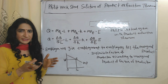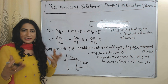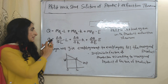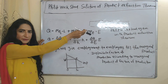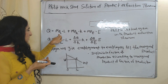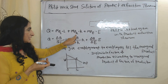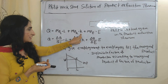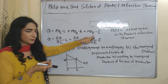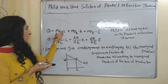Philip Wicksteed agreed with the statement of the Product Exhaustion Theorem, and this is the equation of Philip Wicksteed. Here Q is output, MPL is marginal product of labor, L is number of labor, MPK is marginal product of capital, K is number of capital, MPE is marginal product of entrepreneurship, and E is number of entrepreneurship.